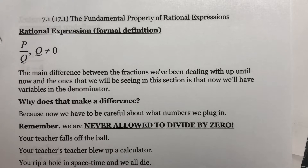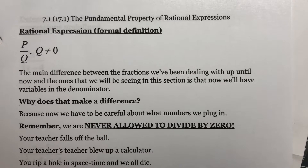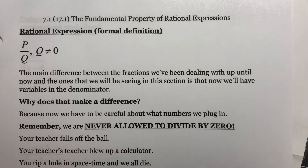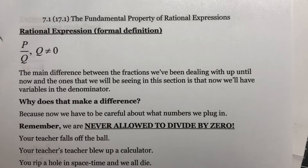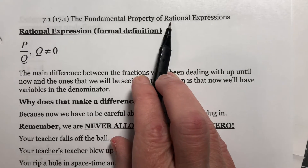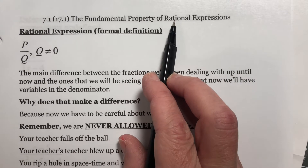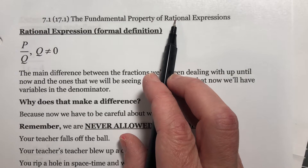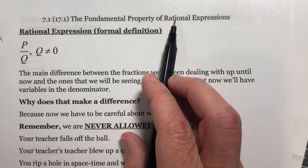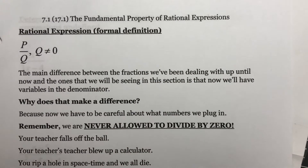Hello, welcome to chapter 7, where we will be dealing with a whole lot of fraction-like things. Chapter 7.1 is about the fundamental property of rational expressions. Rational are fraction numbers — a rational number is anything that can be written as a fraction. So we're going to be dealing with a lot of things we've dealt with before. This chapter is the reason why I've made sure that we dealt with a fraction every single day of class.